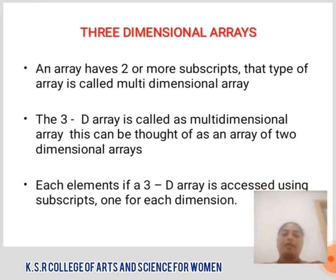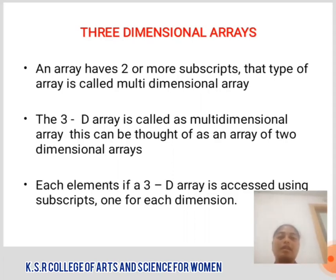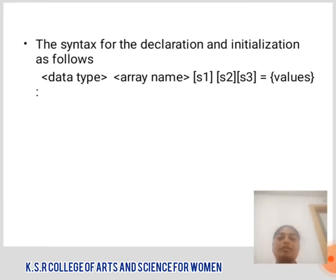3-Dimensional Array: A 3-Dimensional Array has two or more subscripts; this type of array is called a multidimensional Array. The 3-D Array is called the multidimensional Array and can be thought of as an array of two-dimensional arrays. Each element of the 3-D Array is accessed using subscripts — one for each dimension. The syntax for declaration and initialization is: data_type array_name[size1][size2][size3] = {values}.